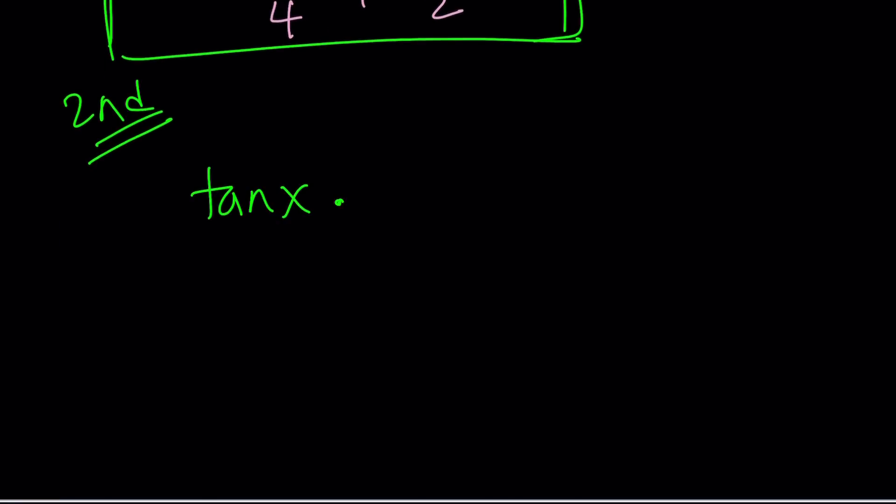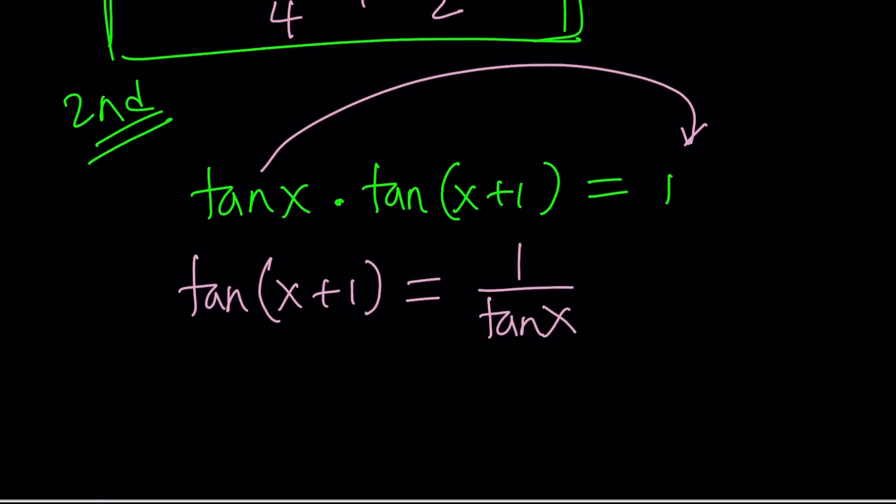So, here's the thing. We have tangent x multiplied by tangent x plus 1 equals 1. That's the original problem. Now, here's what I'm going to do. I'm going to go ahead and divide both sides by tangent x. So, that'll isolate tangent x plus 1. And, that's going to equal 1 over tangent x. Using our trigonometric identity superpowers, what is 1 over tangent x? Cotangent x.